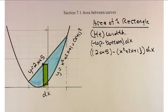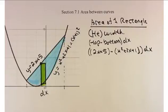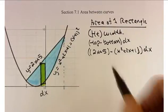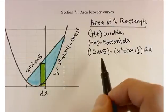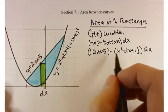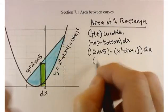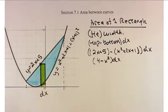That's the area of one rectangle. Now we set this up as a limit of a Riemann sum, and that limit becomes a Riemann integral. I'm going to jump right to the integral. Let's clean this up: distributing the negative sign gives minus x squared minus 2x minus 1, and combining like terms I get 4 minus x squared, dx.